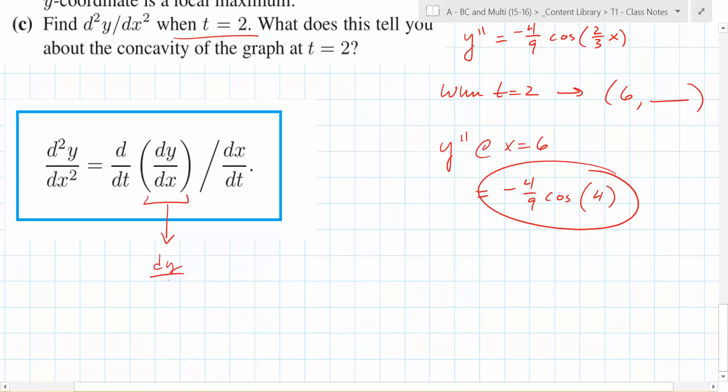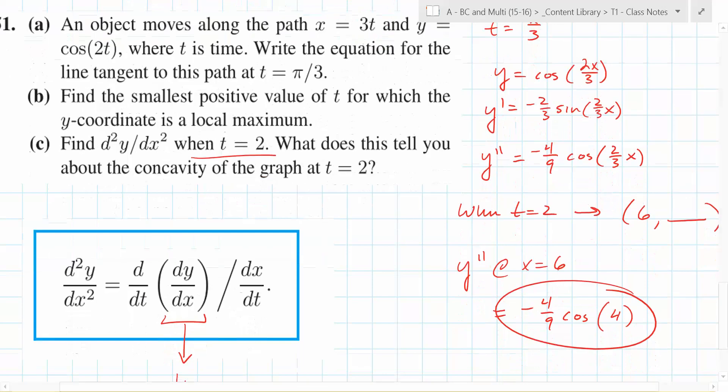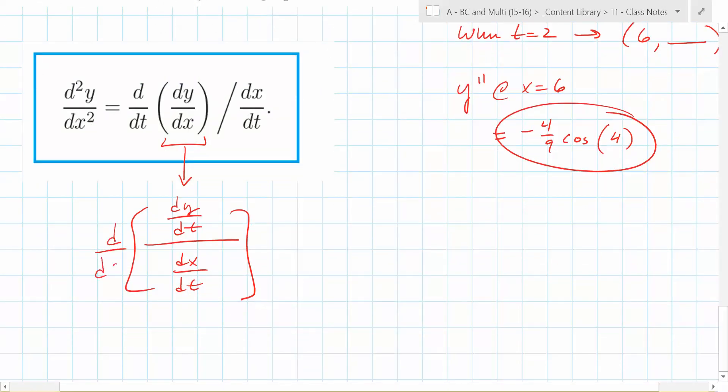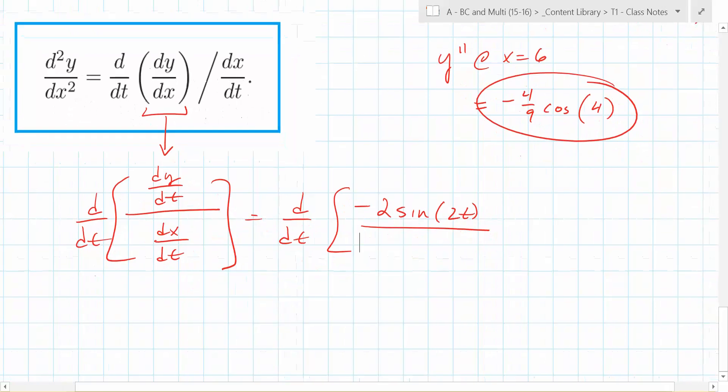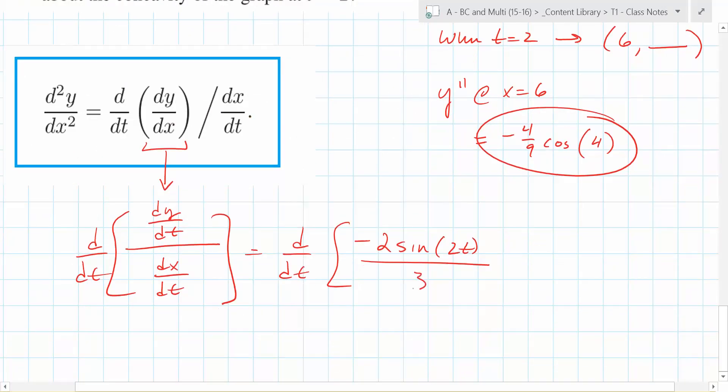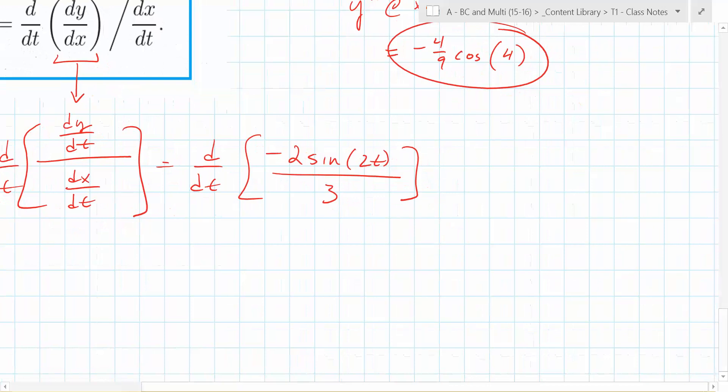So what is that going to be? dy dt over? Yes. dx dt. Do you remember that? We talked about it. What's going to be in this case? What is dy dt? What's dy dt? Negative 2 sine of 2t. Yeah, so you're going to do d dt of what? Negative what? Negative 2 sine of 2t. And what's it over? 2. Is this over what? 3. Yes. So what is d dt of that right there? Negative what? Yeah, negative 4 thirds cosine of 2t. Yeah, 2t, exactly.